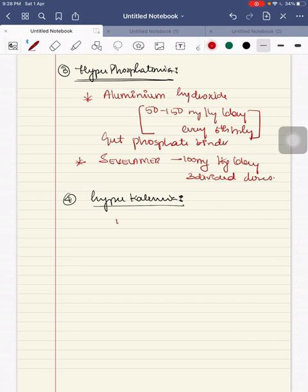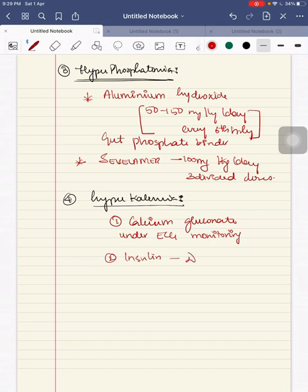Fourth, for hyperkalemia. First, you start with calcium gluconate under ECG monitoring. This calcium gluconate you give for cardiac stabilization. Next, you give insulin. Regular insulin is given at the dose of 0.1 units per kg along with dextrose at the dose of 2 ml per kg of 25% dextrose.